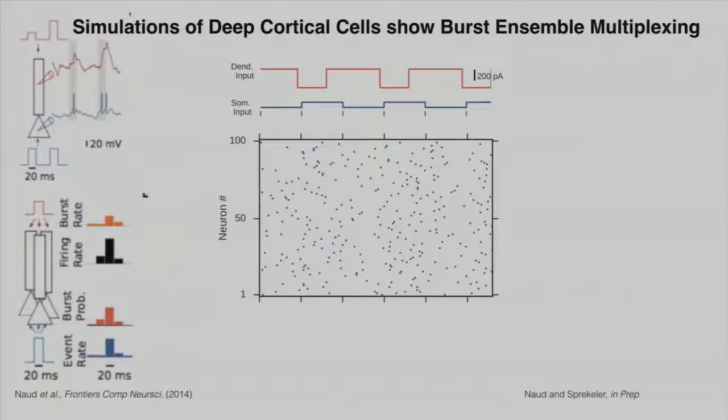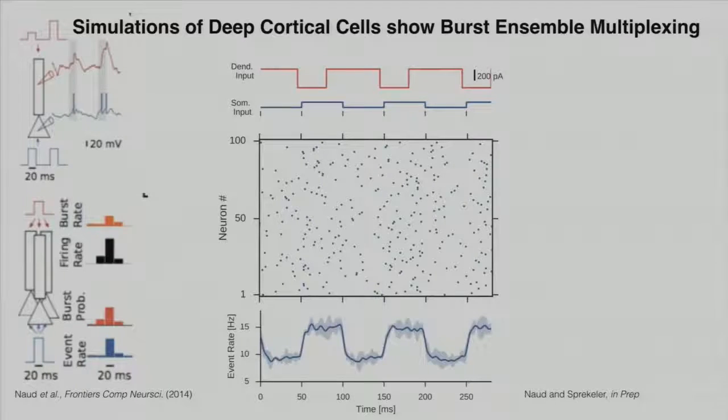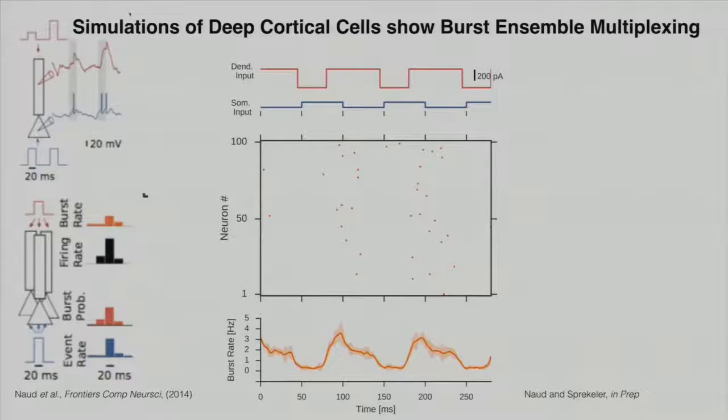However, if I remove all the second and third spikes in a burst, and I say I look only at the events, then I recover the somatic input.